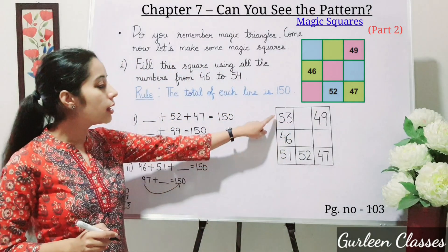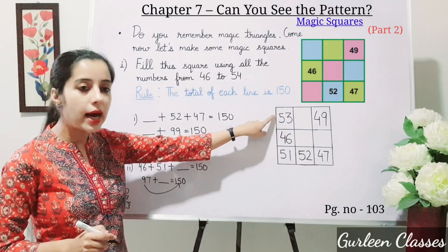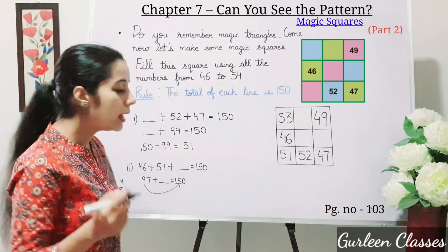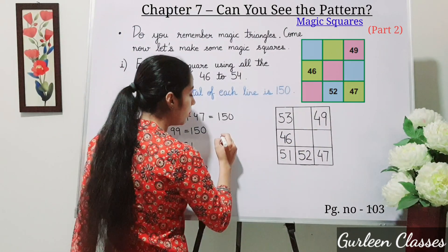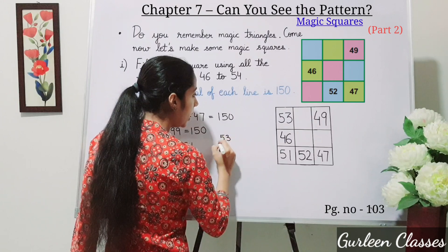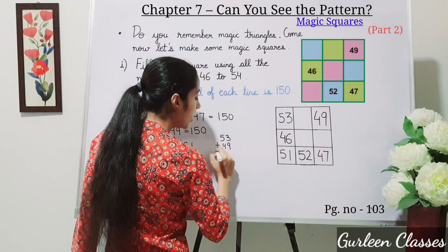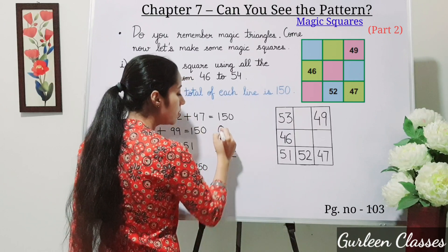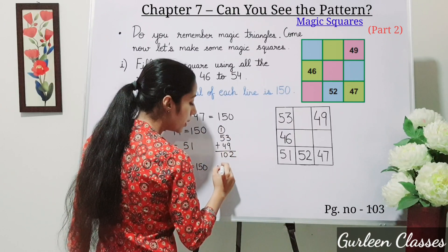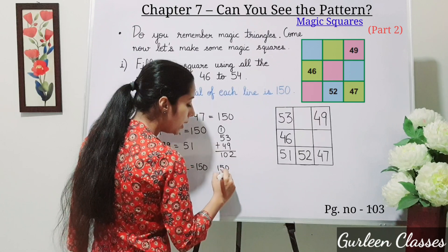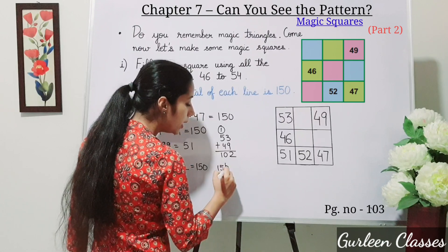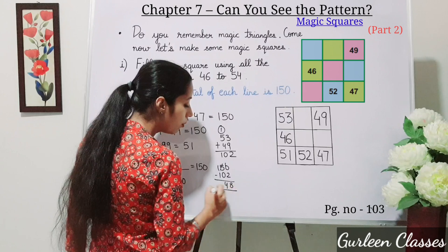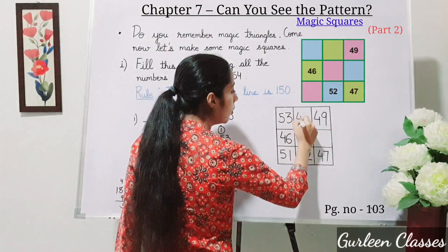Now let us take the first row. We add 53 plus 49, which is 102. Then 150 minus 102 equals 48. So we write 48 here.